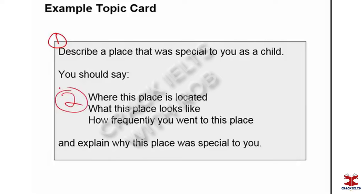In the middle of the card is the first group of sub-points — smaller bits of information that you need to include somewhere in your response. These are: say where this place is located, what the place looks like, and how frequently you went to this place. Then at the bottom is a more open question — something you can talk more about. That's a special part of these cards.